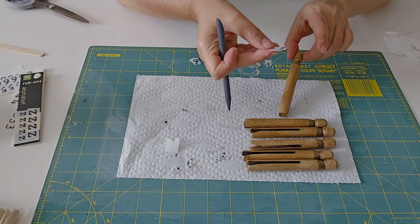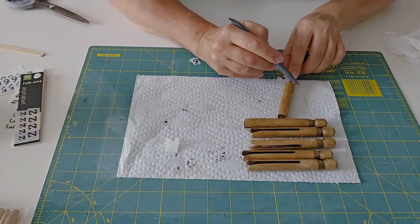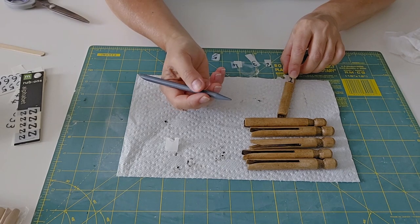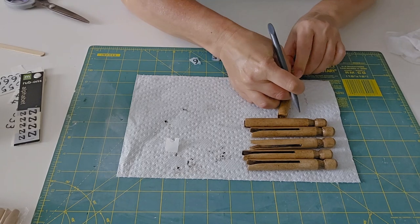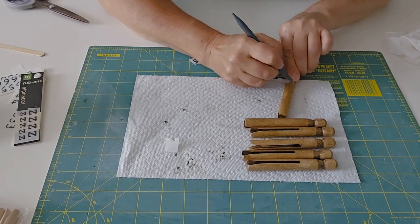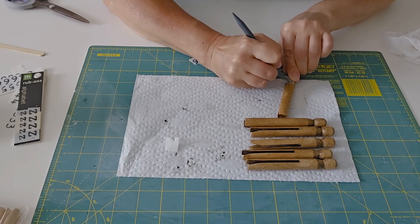You just hold it in place. Now I've removed the backing from my number. I've removed it and you're putting the dark side against your wood so obviously your number or your letter is in the right position.